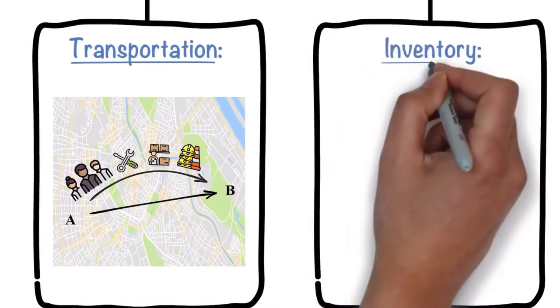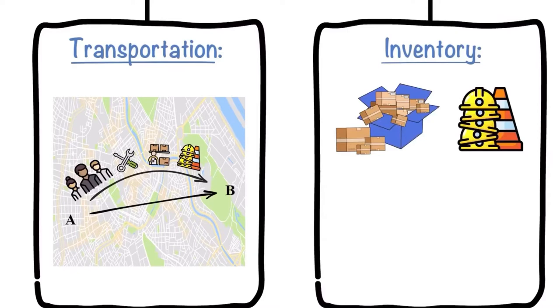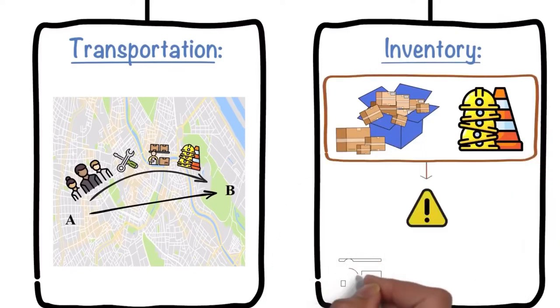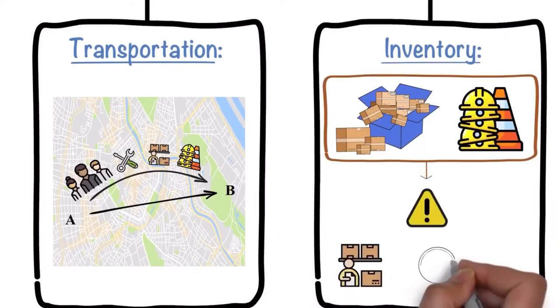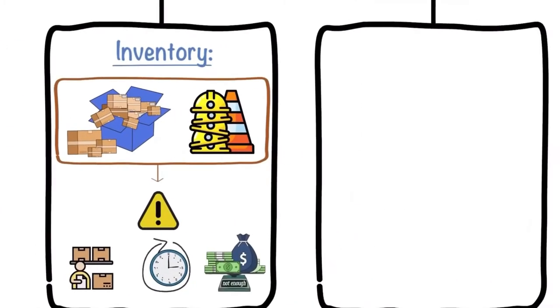Second, inventory. This waste occurs due to having more products and materials than required. This can cause damage and defects to products or materials, greater time for completion, inefficient allocation of capital, and so on.